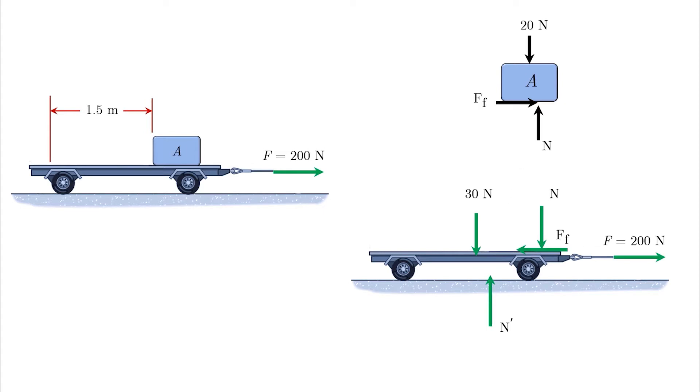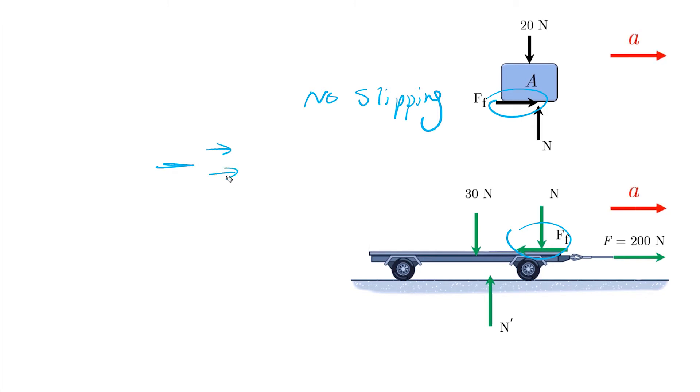then our default assumption is no slipping. And in our case here, no slipping means there is no relative motion between A, the block, and the cart, which means that the cart and the block both will have the same acceleration.